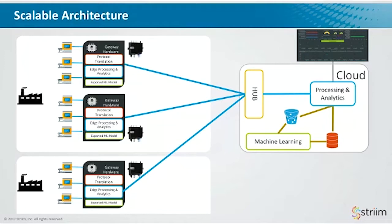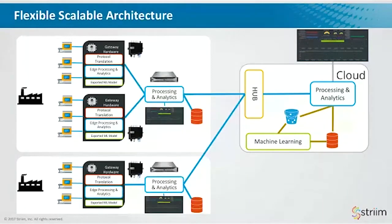In a number of scenarios you may also want to add on-site processing and analytics. This could be because you need to manage an individual facility or production line separately — requiring specialized algorithms and faster reaction times than if data had to travel all the way to the cloud. You may want to repeat that across a number of sites so they all have their own autonomy.